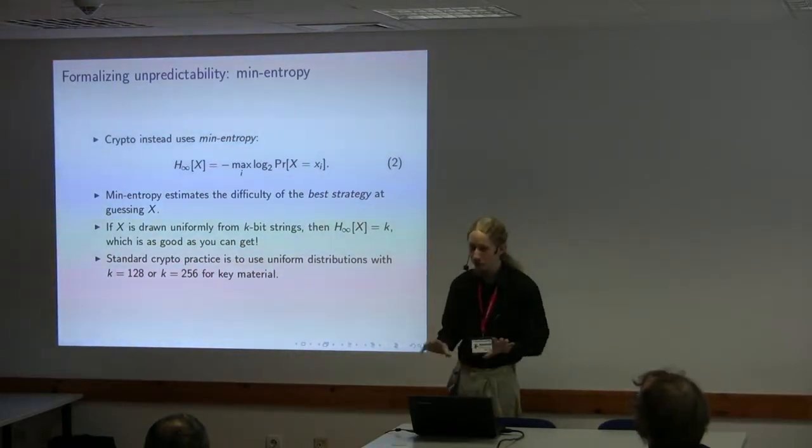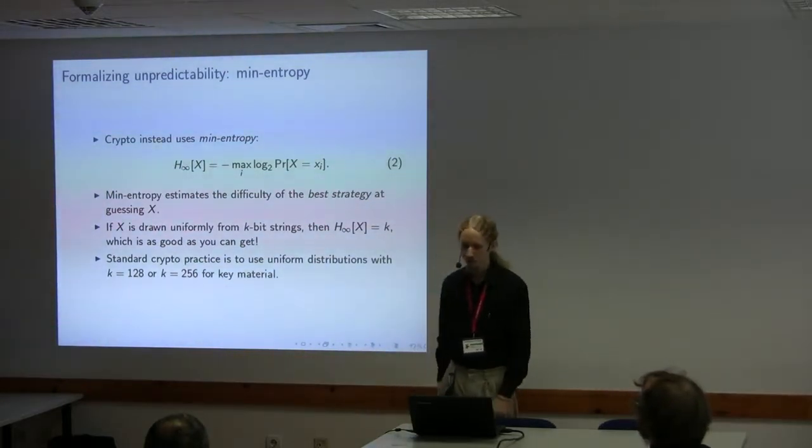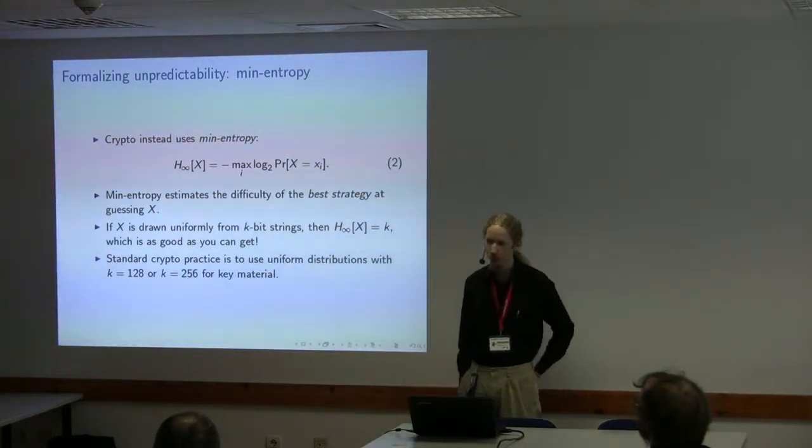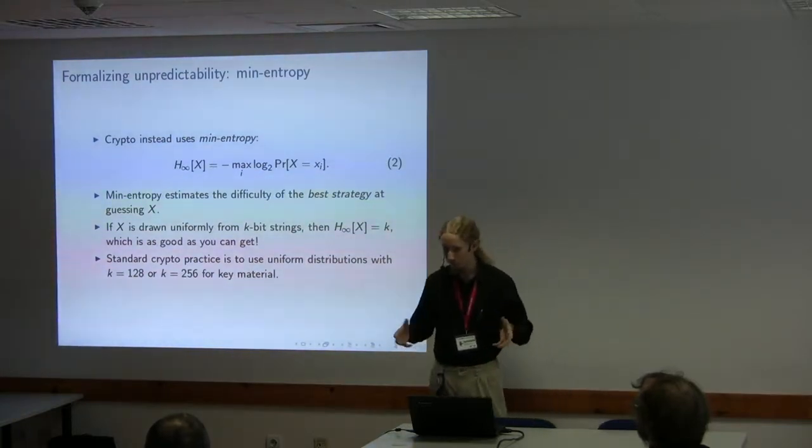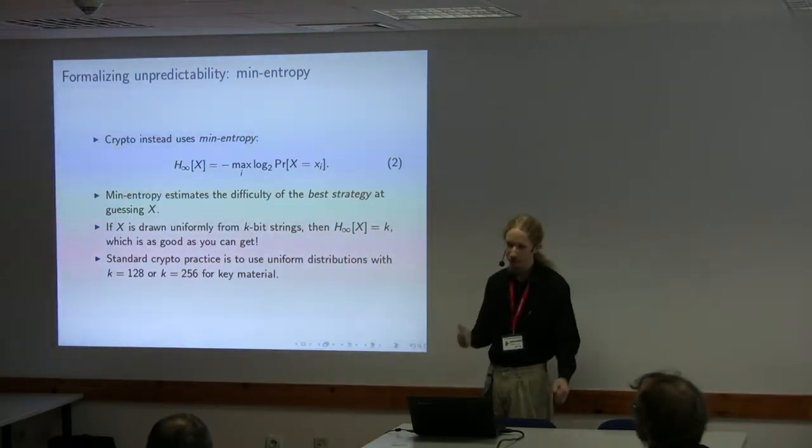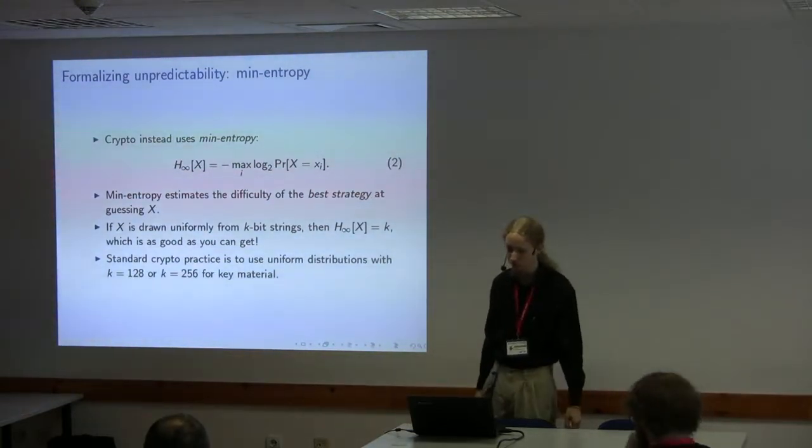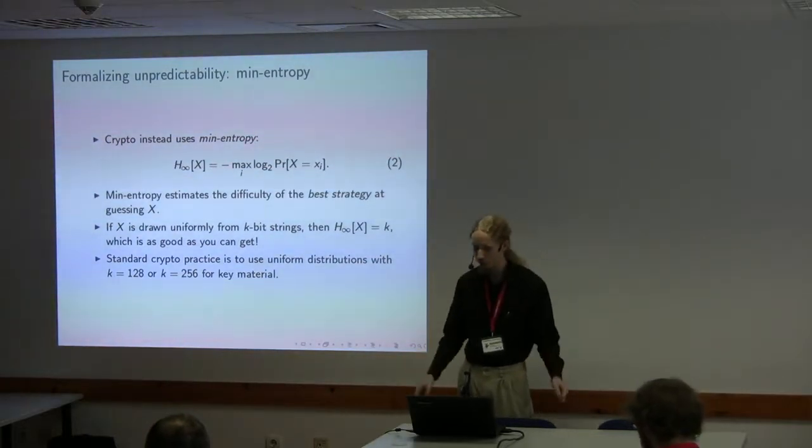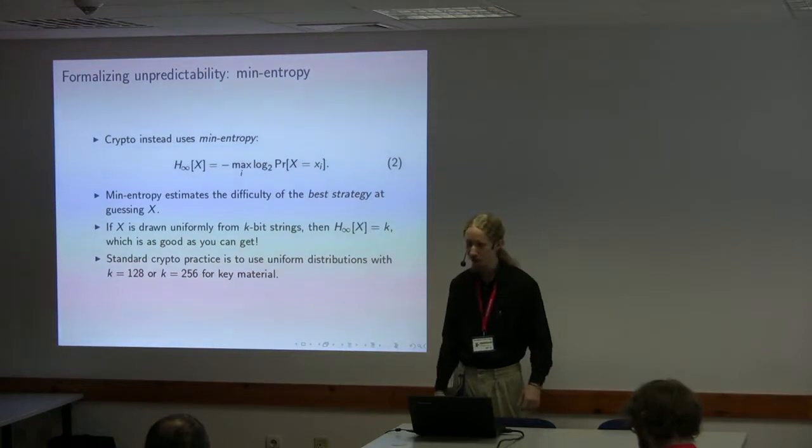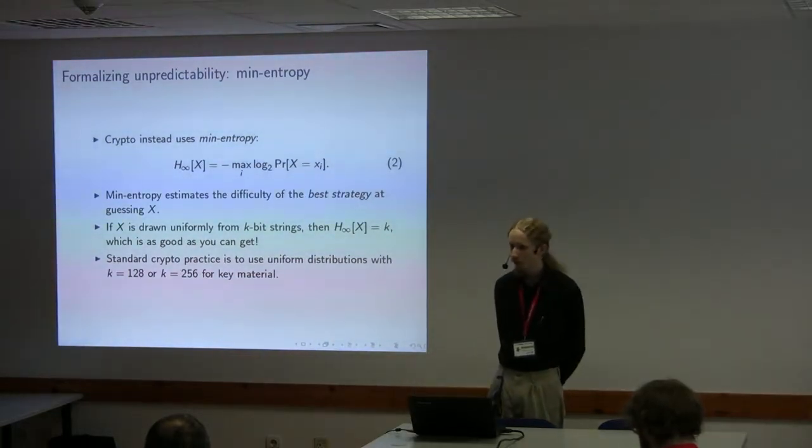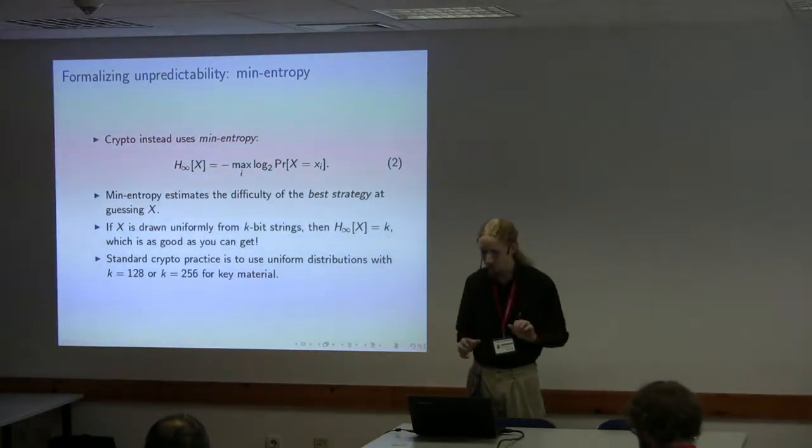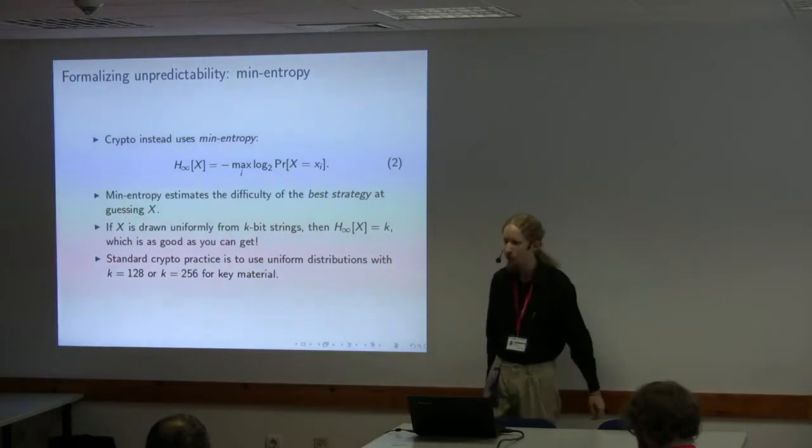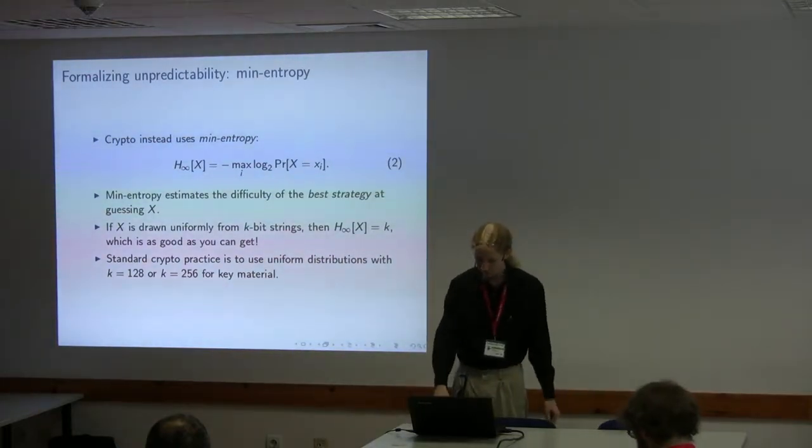Instead in crypto, we use a concept called min entropy, which is a measure of sort of the worst case rather than the average case. In the case of half the time your password is hunter2, and all the rest of the cases each possibility has very low probability, the min entropy of that is going to be one. There's only one bit of min entropy there, which means very predictable. Now, if we're looking at a random variable with uniform distribution, that is, every possibility has the same probability, for example a nice unbiased coin where heads and tails both have one half probability, then the min entropy is just the number of bits of the possible outcomes. If you have 128 bit string you're drawing randomly with uniform distribution, then the min entropy of that is going to be 128. In crypto, the standard practice is to use at least 128, or if you're a little more paranoid or worried about quantum computing, then 256 bits of min entropy.